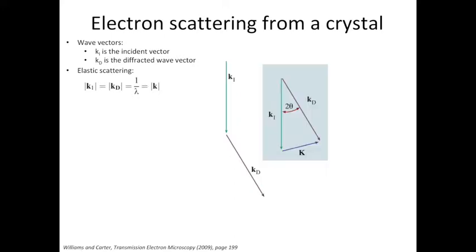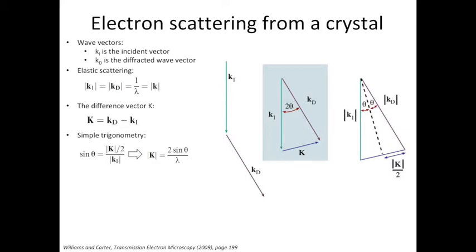Let's reposition ki and kd and get a triangle out of it. If we use kd minus ki, we can get the difference vector which is called k. From simple trigonometry, we can work out the relationship of sin theta and k. What we have here is the magnitude of k is 2 sin theta over lambda.